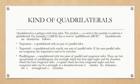A trapezium is a quadrilateral with no pair of parallel sides. A trapezoid is a quadrilateral with exactly one pair of parallel sides. If the non-parallel sides are congruent, the trapezoid is said to be isosceles.